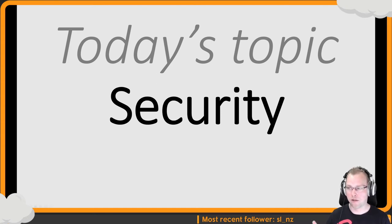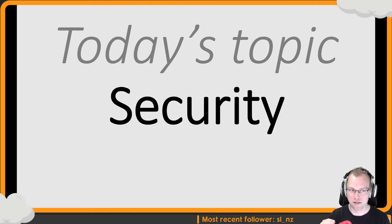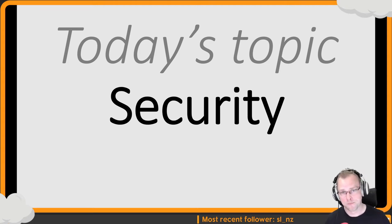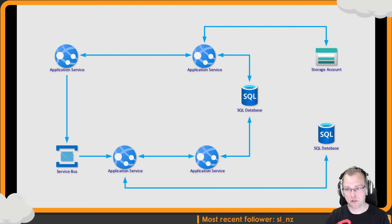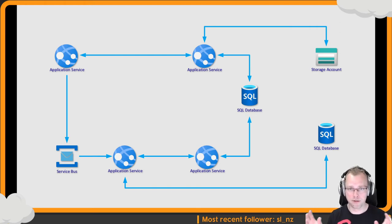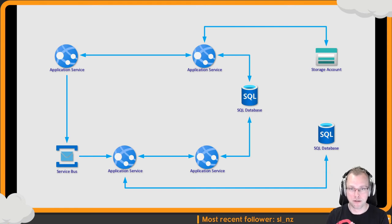So, what to do when thinking about security? Let me show you a diagram of what I see happen quite often at customers. Someone has read about microservices and a lot of customers come up with this kind of design. They have a couple of app services as their microservices, some queuing, databases, and storage. Because all these services need to share data, they've connected them via HTTP requests. Needless to say, I'm not very happy with these kinds of designs, but it's what I see implemented quite often.